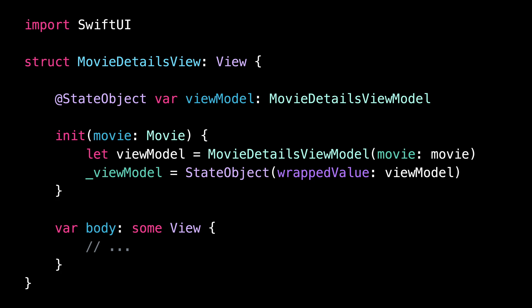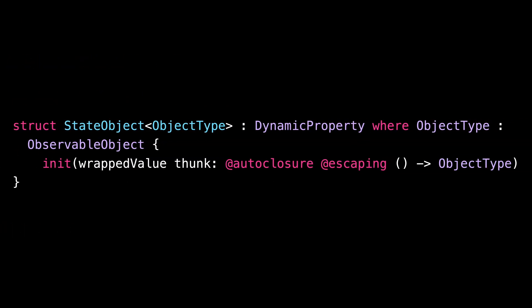That might seem confusing, but let me explain. To understand what's happening, we need to take a look at the signature of the StateObject wrapper initializer. As you can see, its argument is annotated with @autoclosure. This information wasn't visible at the call site, but it's really important. What @autoclosure means is that the argument we pass will be automatically wrapped inside a closure, and the StateObject wrapper will make sure that this closure is only called once during the entire lifetime of the view.